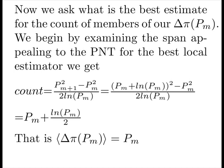Now, we ask, what is the best estimate for the count of members of our delta π operator? We begin by examining the span appealing to the P and T for the best local estimator. A little algebra, we're dividing by the log of the prime, or twice that because we're on the square. And we get P plus some small term, but that's P.